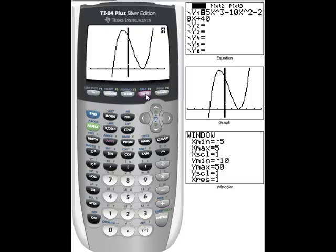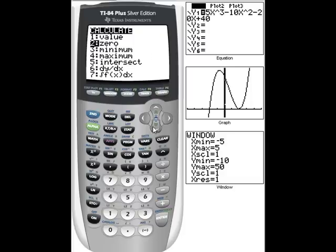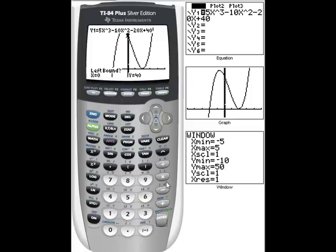So I'm going to do second calc, go down to max, enter. Now left bound, I need my cursor to the left of the maximum point. I hit enter. To the right of the maximum point, I hit enter and enter again. So my maximum point is when x equals negative 0.66 and y is 47. So it's pretty far up there. And we already know what our local minimum is. It's right here.